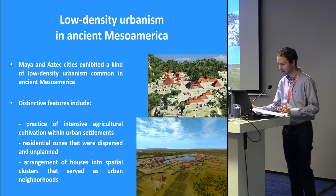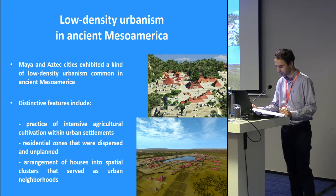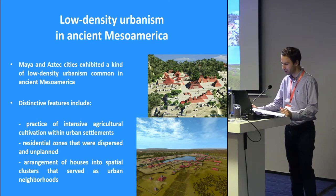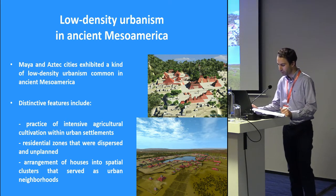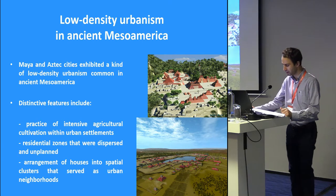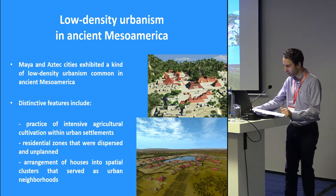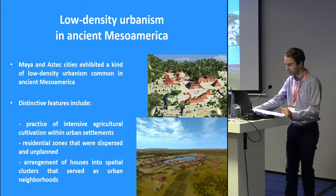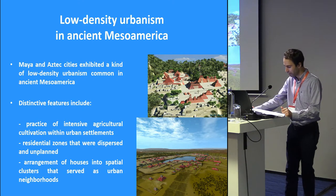To name an example, Maya and Aztec cities exhibited a kind of low-density urbanism common in ancient Mesoamerica. The non-monumental components of these cities differ from the high-density cities in the Old World that are often considered the norm of pre-modern urbanism. Distinctive features of Maya and some Aztec cities include the practice of intense agricultural cultivation within urban settlements, residential zones that were dispersed and unplanned, and arrangement of houses into spatial clusters that served as neighborhoods. The residential areas of Maya and Aztec cities resembled modern peri-urban zones and informal settlements.